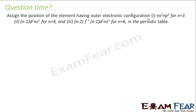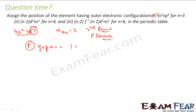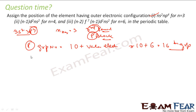Assign the position to the element having outer electronic configuration: put n equals 3, this becomes 3s² 3p⁴. The maximum value of n is 3, so it is the third period. The last electron is coming into p, so this is p-block. For p-block, group number equals 10 plus valence electrons: 10 plus 2 plus 4 equals 16. So it is third period, p-block, group 16.